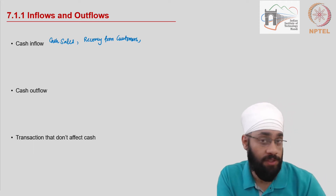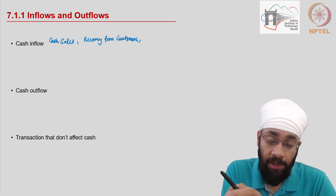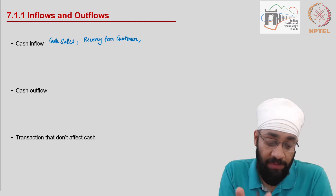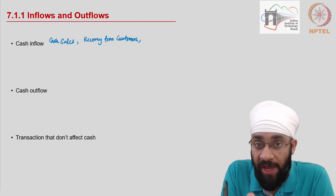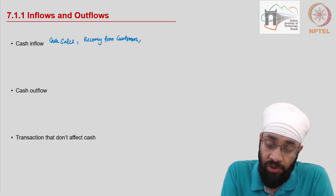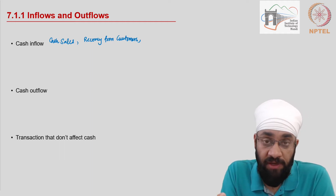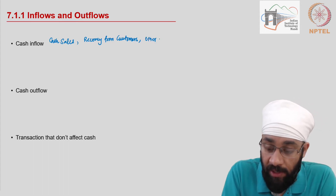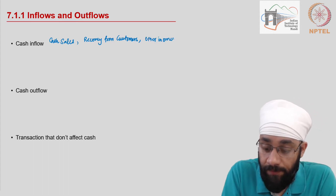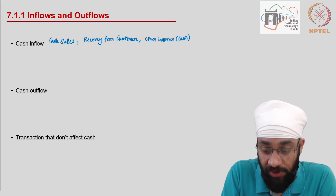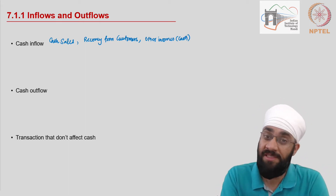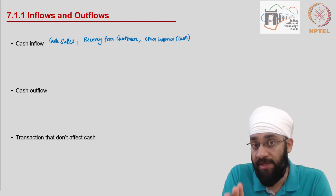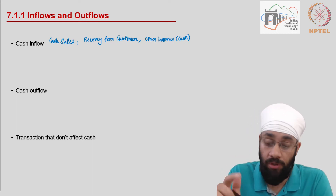Payments received from customers at a later point in time are another primary source of cash. Other than this, you could receive income from any other sources — any other incomes — and again, we're talking about cash received, not accrued incomes. If you've received the cash against an income, that is the part of the transaction we're talking about here.